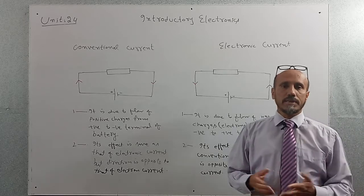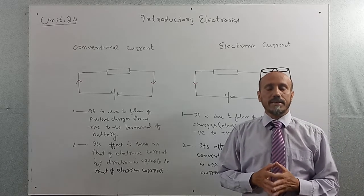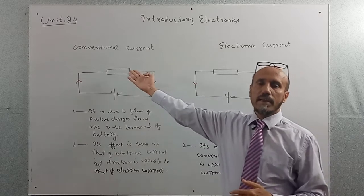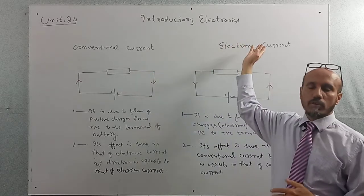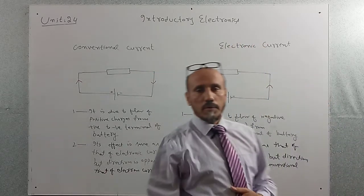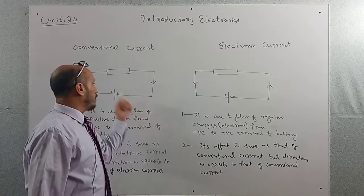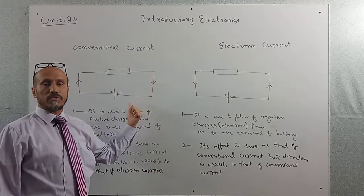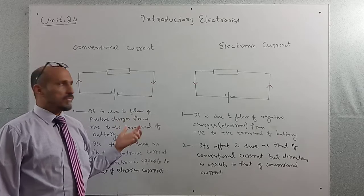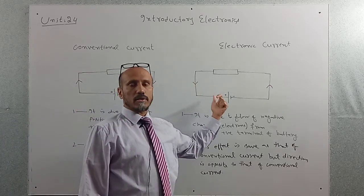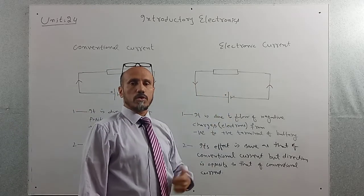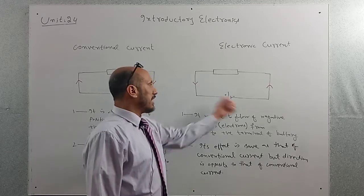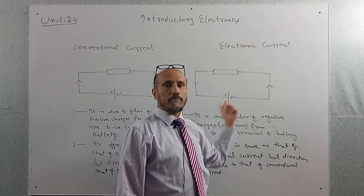On the basis of those theories, we have concluded that there are two types of currents. Number one is called conventional current, and number two is called electronic or electron current. Conventional current always flows from the positive terminal of the battery to the negative terminal due to the flow of positive charges, while electron current always flows from the negative terminal to the positive terminal due to the flow of electrons.